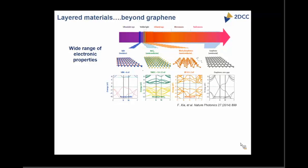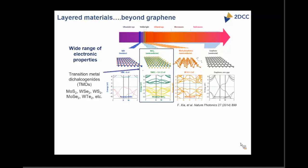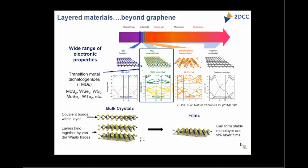We are specifically focused on the transition metal dichalcogenides — we are trying to grow semiconductors which are electronic grade. Structurally, they have very strong covalent bonding between the metal and the chalcogen, with black dots representing the metal and yellow dots the chalcogen. But they have very weak bonding between the layers, which means it's possible to separate out individual layers and have stable arrays of these materials.